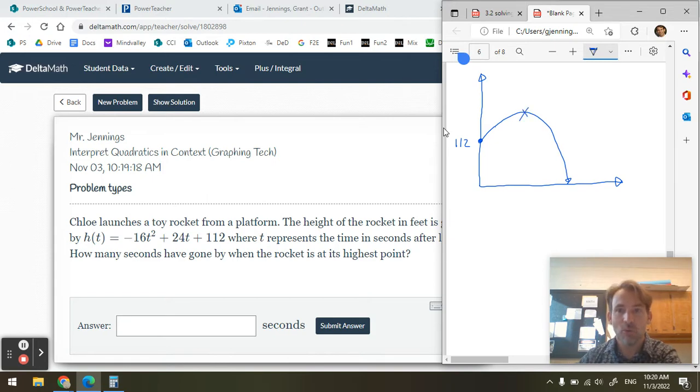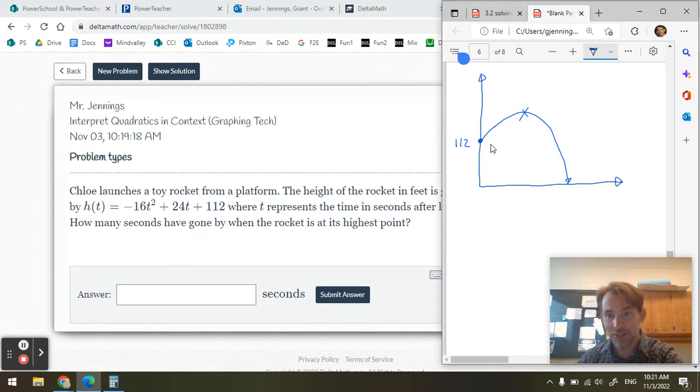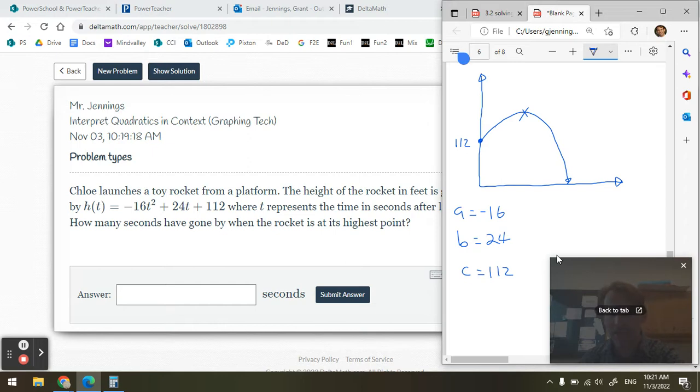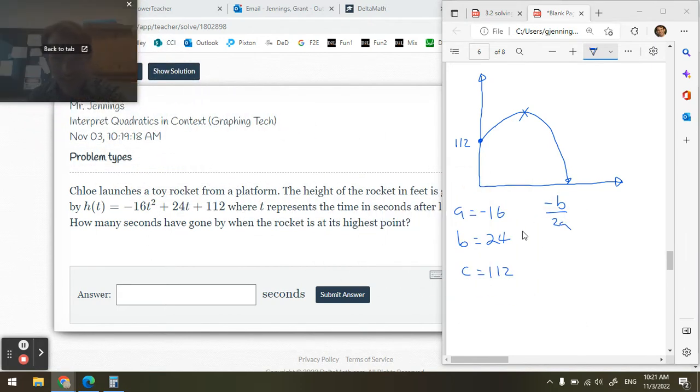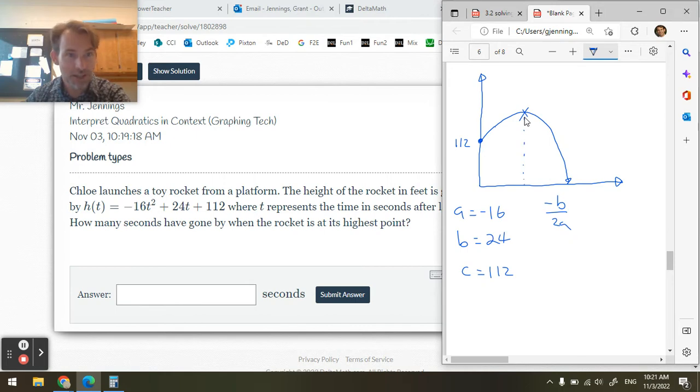And I've been asked to find when is that at the maximum height. Okay, so I prepare my little chart of a = -16, b = 24, and c = 112. And I use -b/2a, because I am trying to find the time when this is at its highest point. And I know that that's going to be on the axis of symmetry. And it's going to be the vertex. And I can find the x value of the vertex with -b/2a.